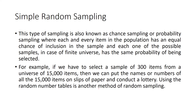For example, if we want to select a sample of 300 items from a universe of 15,000 items, we can put the names or numbers of all 15,000 items on slips of paper and conduct a draw. Using a random number table is also another method to collect a random sample. This is known as simple random sampling.